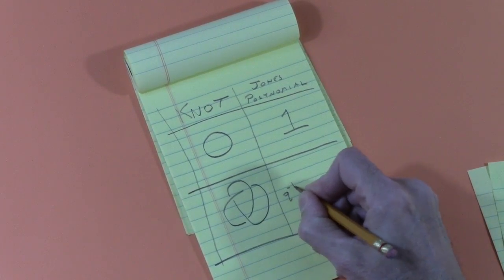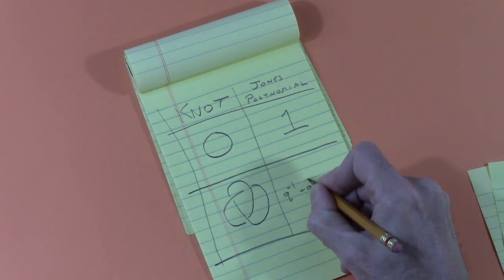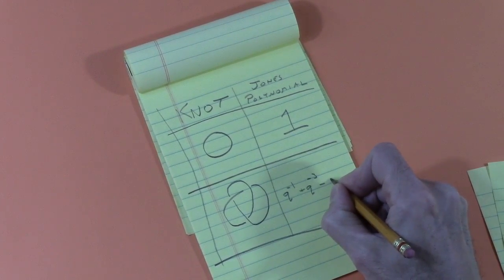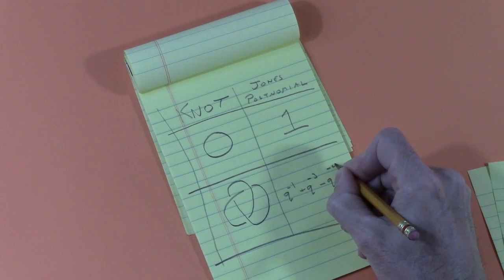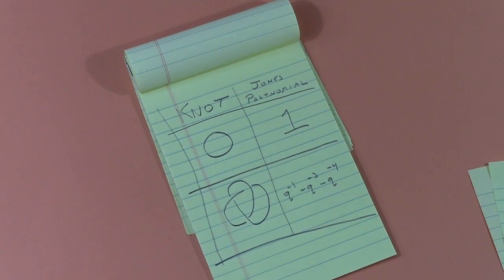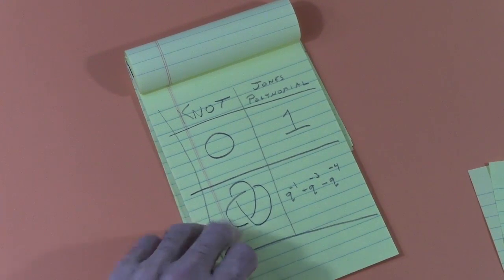The exact details don't really matter here. There's a well-accepted theorem that says if two drawings have different Jones polynomials, then it's impossible to manipulate one form into the other. So this sort of formal analysis seems to say it's impossible.